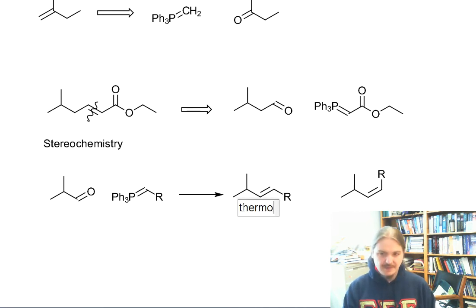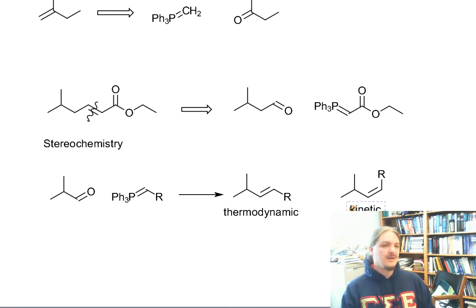This trans isomer is the thermodynamic isomer. We know from way back that trans alkenes are a little bit more stable than cis alkenes. But the cis product is the kinetic product. The types of things that tend to favor kinetic versus thermodynamic control will work here, with an exception.